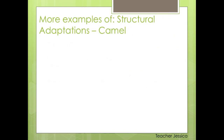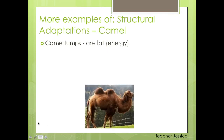Another example is this guy here — the camel. This guy has humps, which means they can save and keep fat and energy. We can find fat and energy in those humps. Camels live in a place where it's hard to find water and food, so when they find it, they eat a lot and save some in their humps so they can stay alive for a while.